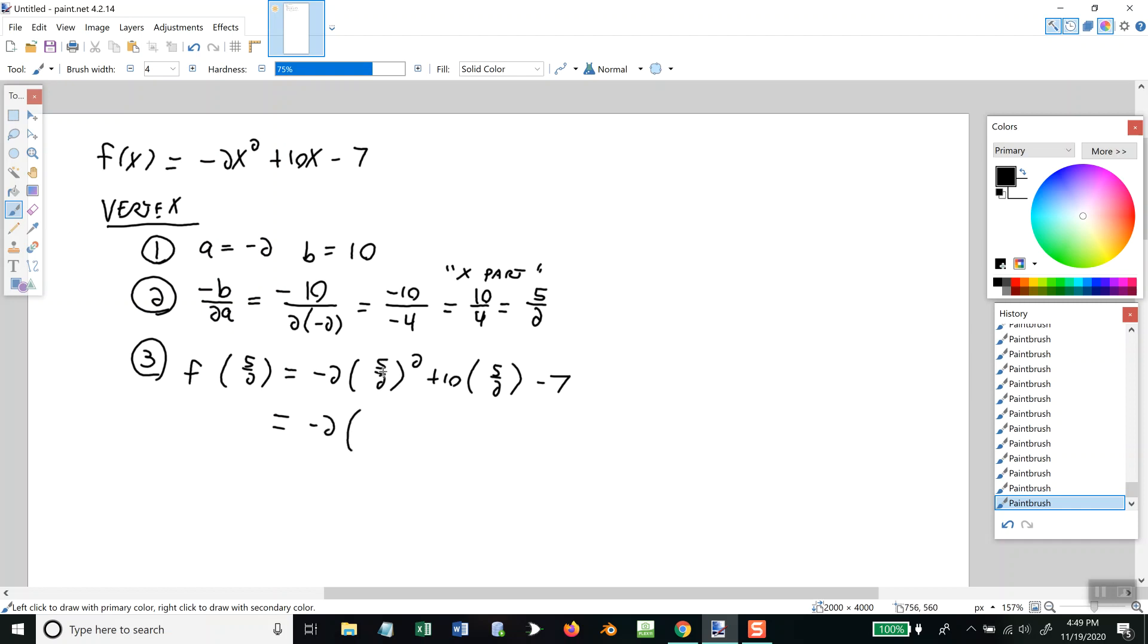When you square a fraction, you square the top number and you square the bottom number. So, our numerator squared, 5² is 25. When I square the bottom number, the denominator, 2² is 4. Plus, 10 times 5 is 50 over 2, minus 7. And -2 times 25 is -50 over 4, plus 50 over 2, minus 7.